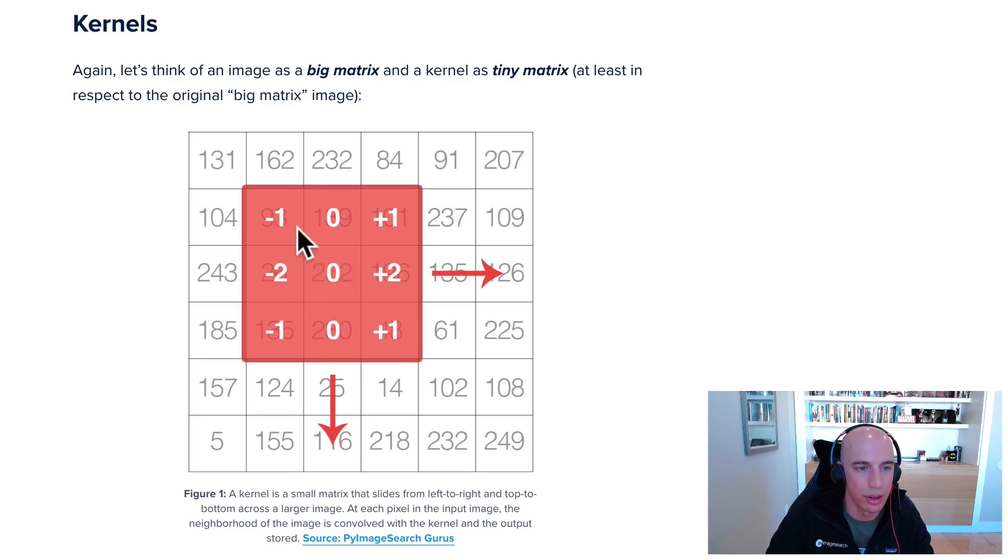You're going to take the kernel values—negative one, negative two, negative one, zero, zero, zero, positive one, positive two, positive one—and do an element-wise multiplication with the values behind it. Once you've done the element-wise multiplication, you're going to take the sum.